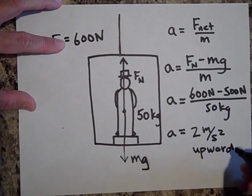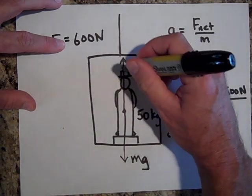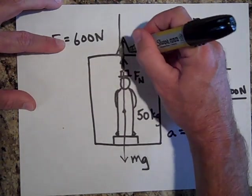So if you work that out, a is two meters per second squared upward.